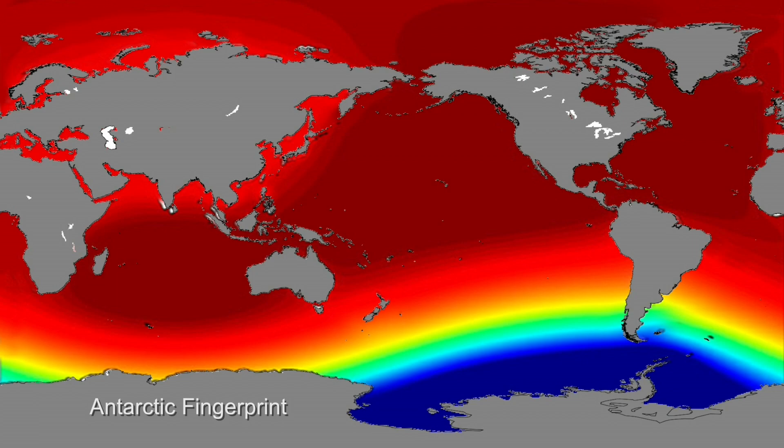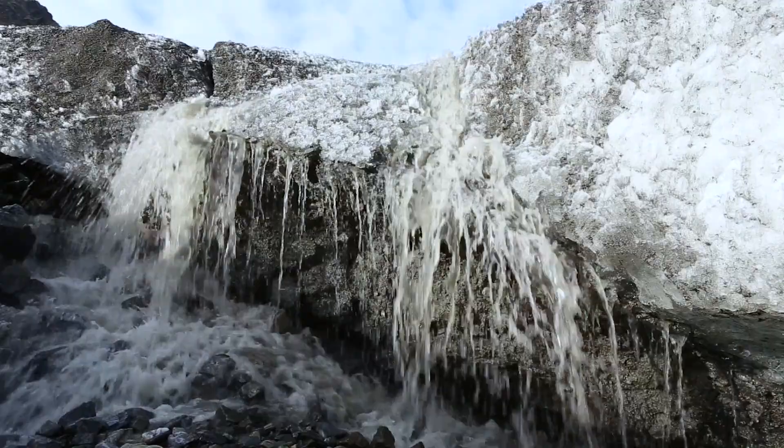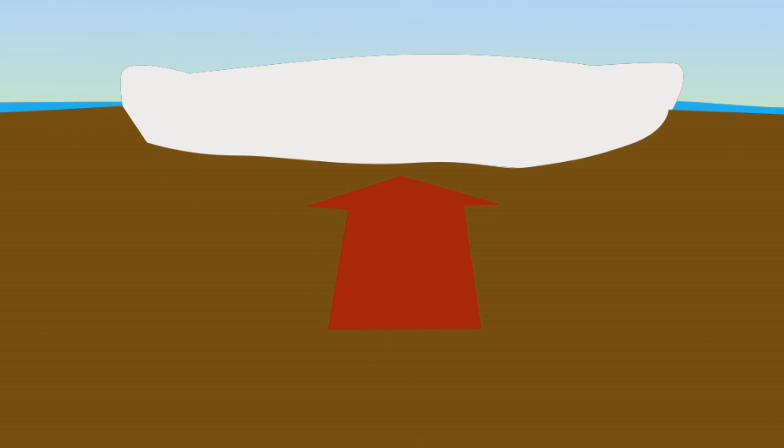Sea level varies from place to place and it can vary quite dramatically. So if you melt an ice sheet, three things happen. The first thing is you're certainly dumping water into the ocean. But two other things happen that are more subtle and require a lot of care in modeling. When an ice sheet melts, that crust pops up — we call it rebound. That's the second thing that happens.